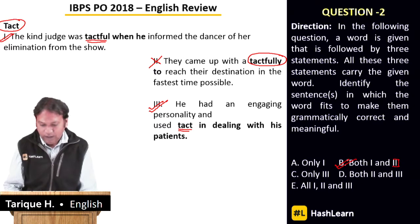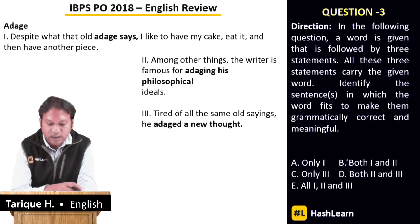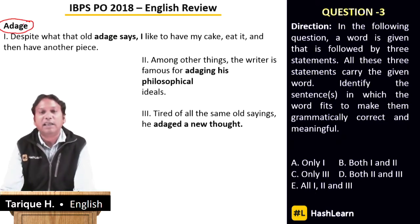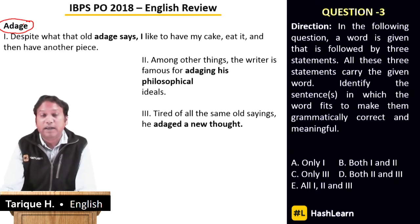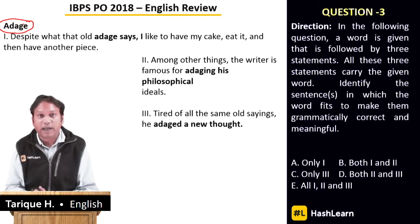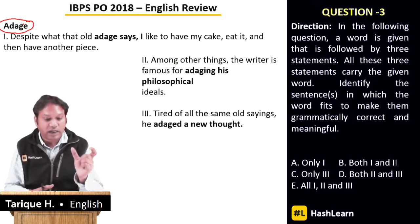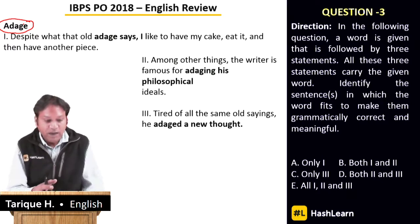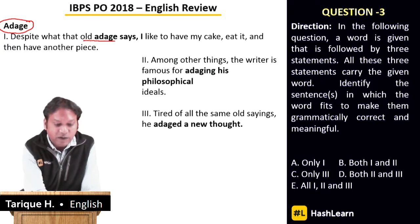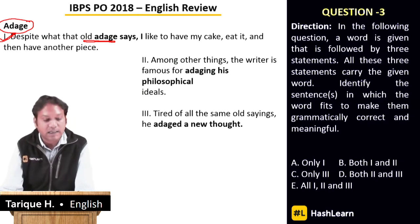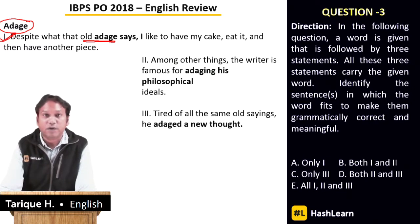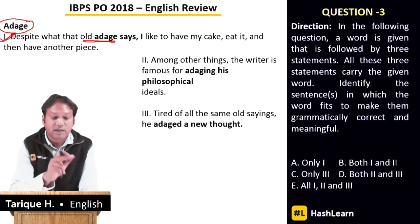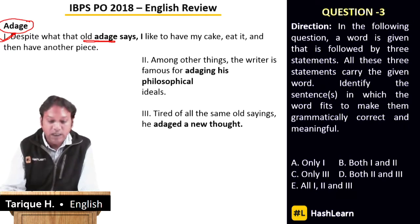Question number three — the word is 'adage.' An adage is a platitude, an old saying — for example, 'work is worship,' 'knowledge is power,' 'a stitch in time saves nine,' or 'honesty is the best policy.' These are adages: old sayings with a lot of wisdom. The first sentence: 'Despite what that old adage says, I like to have my cake, eat it, and then have another piece' — referring to the adage 'you can't have your cake and eat it too' — used correctly.